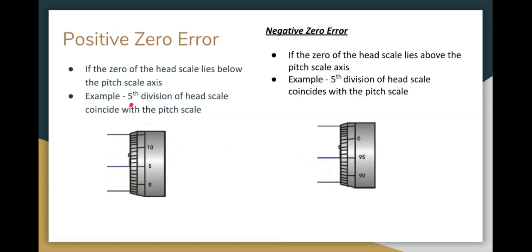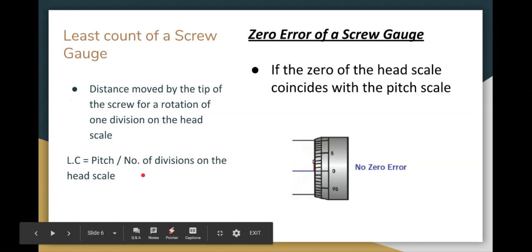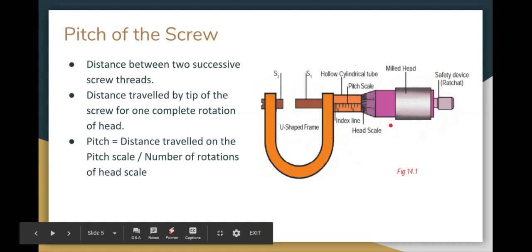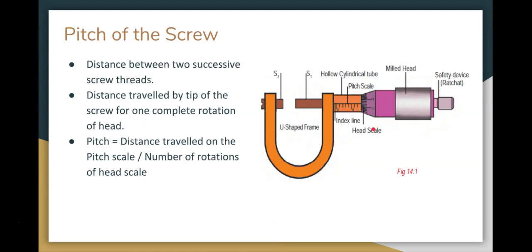Next, positive zero error. The head scale will be lower than the pitch scale. For example, if five divisions are lower, that's positive zero error. So that's positive zero.